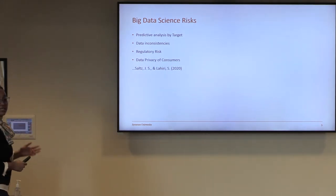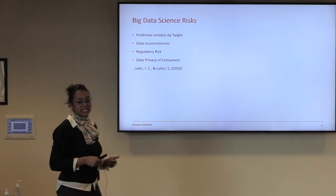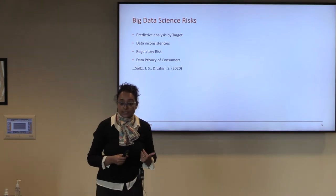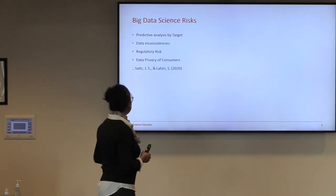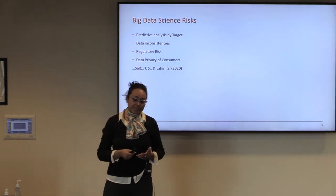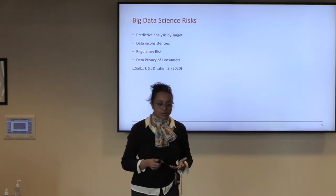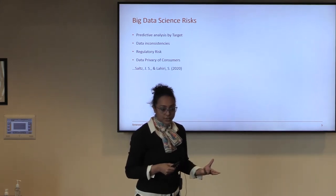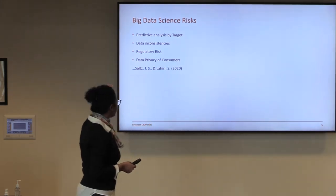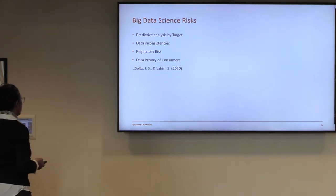Then we have data inconsistencies — with the influx of structured and unstructured data, we see a lot of inconsistencies. Then there is regulatory risk: GDPR and CCPA become a hindrance when we have subsidiaries across the globe while domiciled in the United States. And lastly, there is the data privacy of consumers.